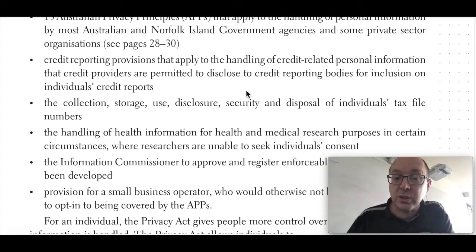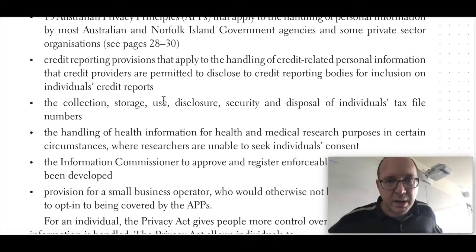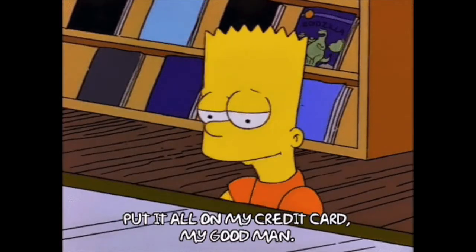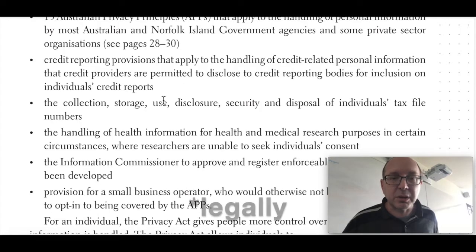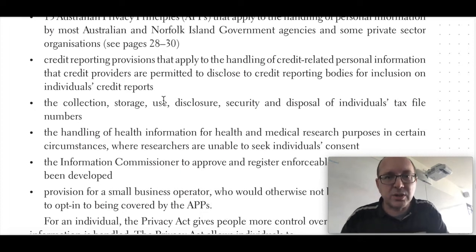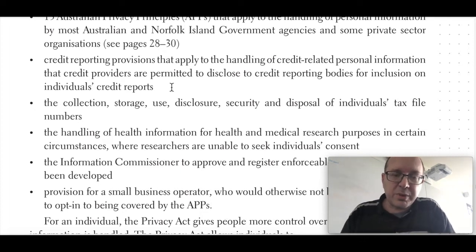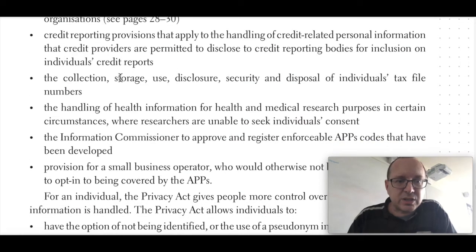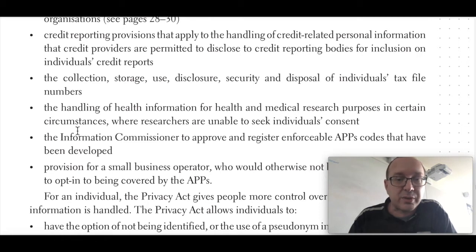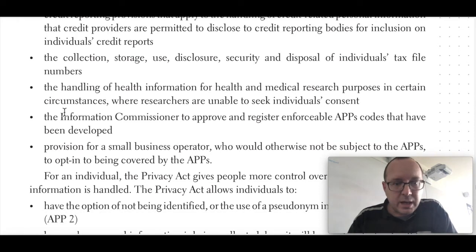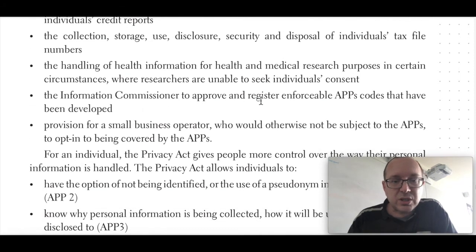Credit providers are permitted to disclose credit-related personal information to credit reporting bodies for inclusion on individuals' credit reports. So if I rack up a big debt on my credit card, the credit card people are legally allowed to pass that information on to other people that might be wanting to lend me money. It also covers the collection, storage, use, disclosure, security and disposal of individuals' tax file numbers, and the handling of health information in certain circumstances, though there is another whole act for that as well. The Information Commissioner can approve and register applicable APPs codes — Australian Privacy Principles codes — that have been developed.